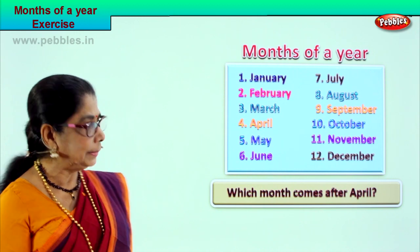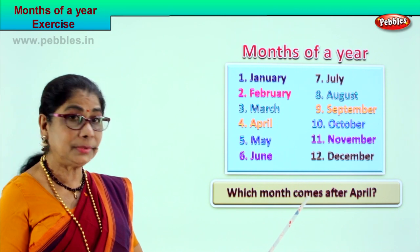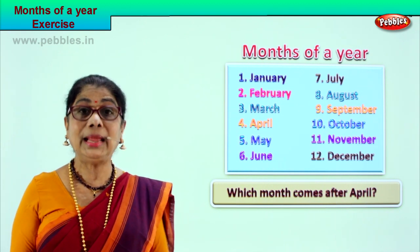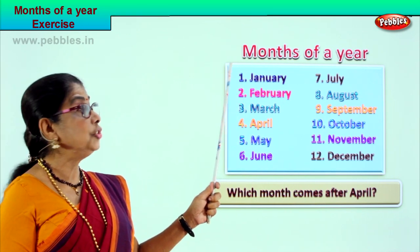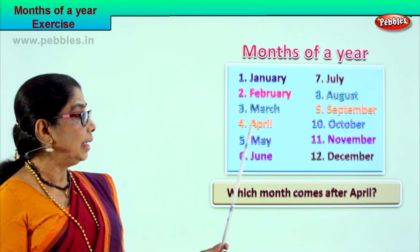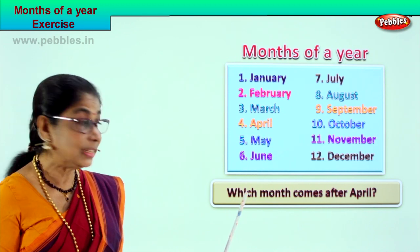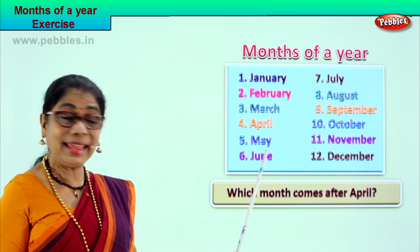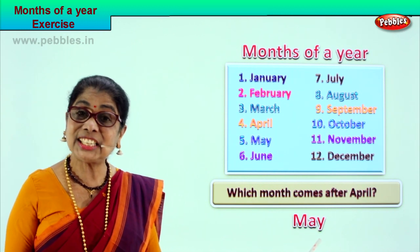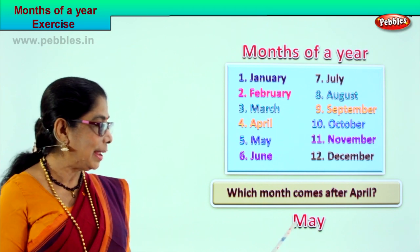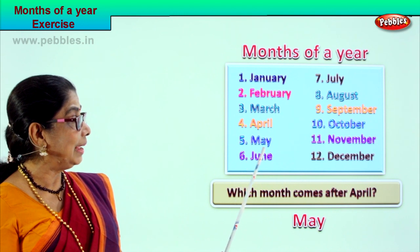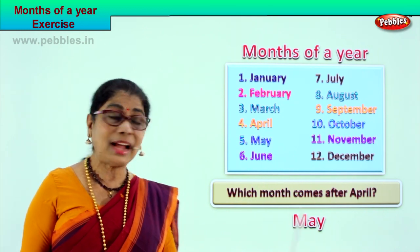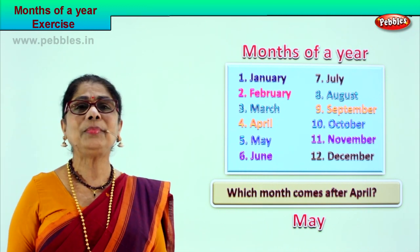Read the question and find the answer: which month comes after April? Let's go to the chart — the first month is January, February, March, April, then comes May. Which month comes after April? After April comes May. Spell May: M-A-Y. The month of May comes after April. Did you enjoy the exercise? Let's go to another exercise.